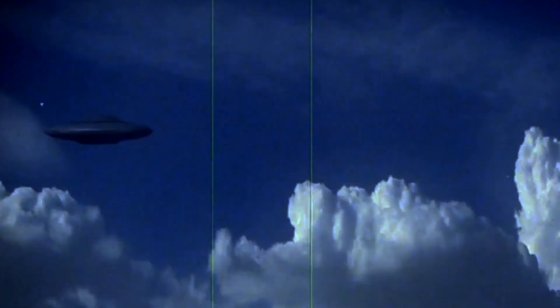Next, we have earthly objects. Common objects such as aircraft, balloons, birds, and searchlights can create optical illusions or unusual lights in the sky. These mundane items sometimes lead to UFO reports, making the ordinary seem extraordinary.